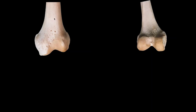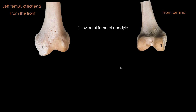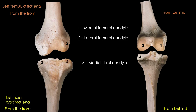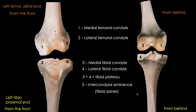Now let's focus on the bones of the femur. We are looking at the distal end of the left femur — one view from the front and one from behind — showing the medial femoral condyles and the lateral femoral condyles. The other bone contributing to this joint is the proximal tibia, where we can see the medial and lateral tibial condyles. The combined area of these condyles is called the tibial plateau, a feature visible in radiographs. The slightly raised part between them is called the intercondylar eminence, or tibial spine.